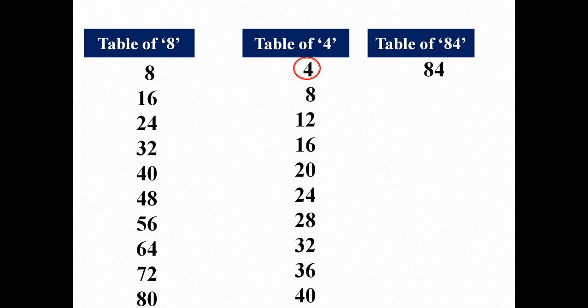In the second row, again observe the table of 4. Here is again a single digit number. Then we will write all 3 digits as it is — that is 168. So we can say that 84 2s are 168.